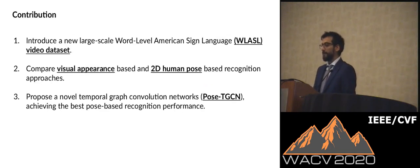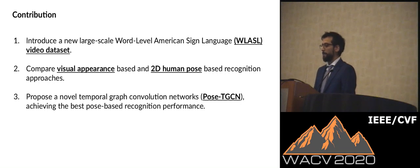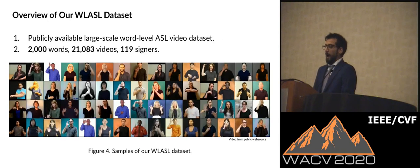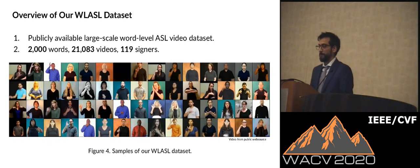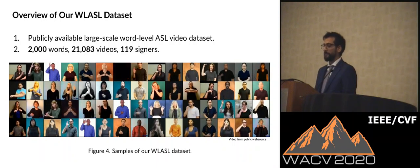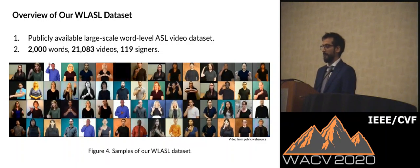To this end, we introduce a new large-scale dataset named World-Level American Sign Language. Taking advantage of this large-scale dataset, we are able to experiment with two typical gesture recognition approaches based upon it: visual appearance and 2D human poses. Additionally, we propose a pose-temporal graph convolution network that uses 2D human poses, achieving the best pose-based recognition performance. Our proposed dataset is publicly available with more than 21,000 videos, covering 2,000 words with different dialects and 119 signers. With this effort, we hope to facilitate sign language understanding research.